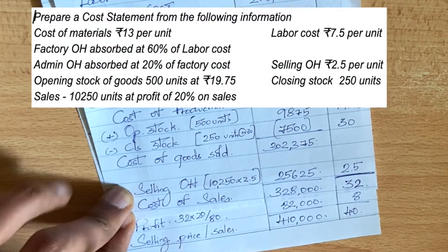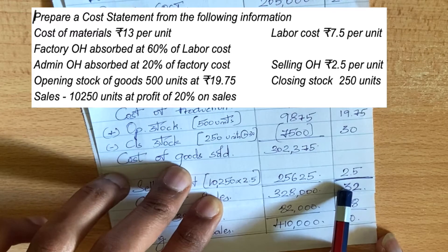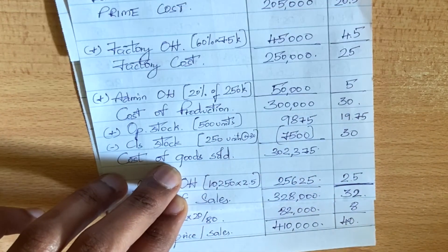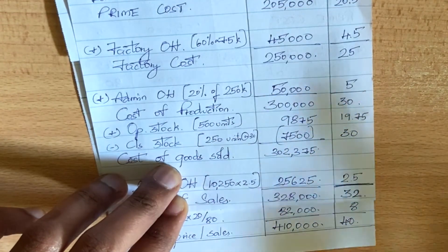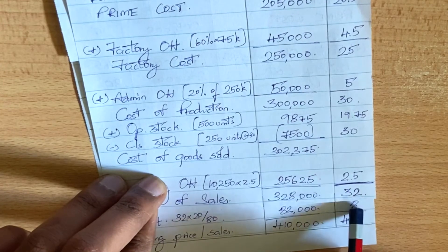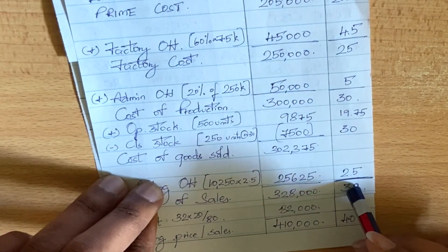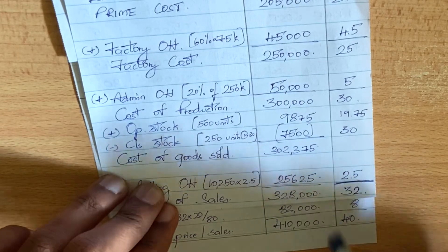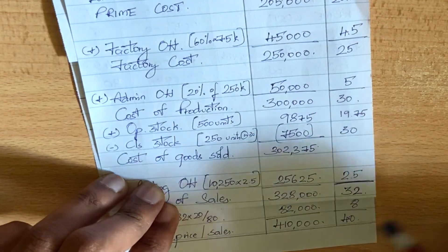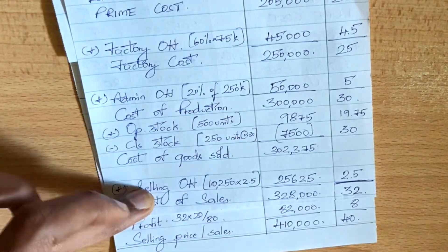Now, the profit is 20% on sales, which means cost is 80%. So the total selling price: 32 multiplied by 100 divided by 80 gives 40 per unit. Profit per unit is 32 multiplied by 20 divided by 80, which gives 8. So the logic is: cost is 80%, profit is 20% — converting to 100% gives selling price of 40, and the profit is 8. So the denominator must be 80.